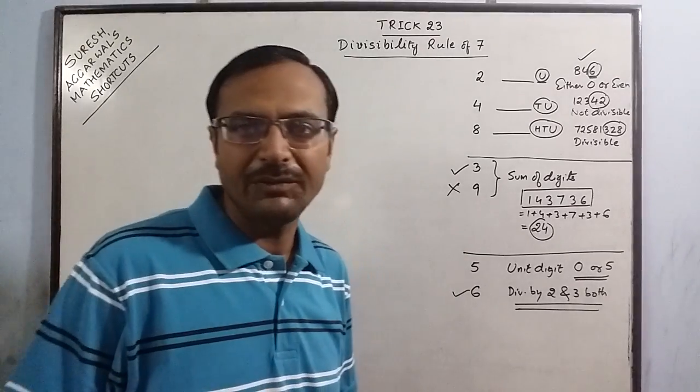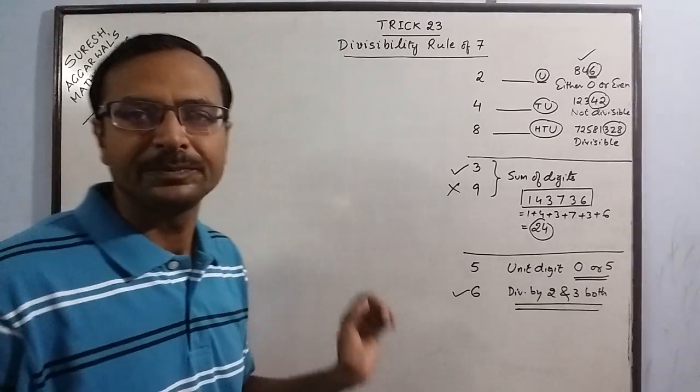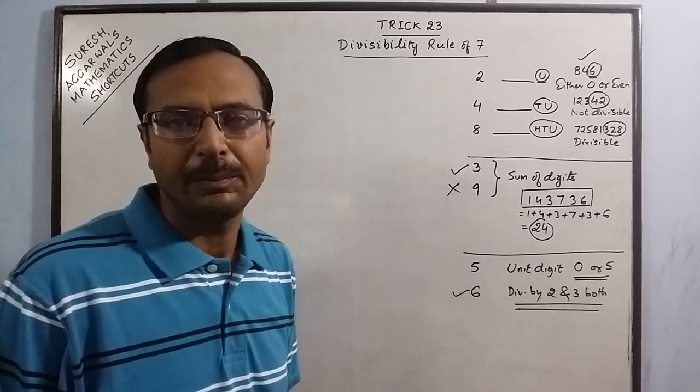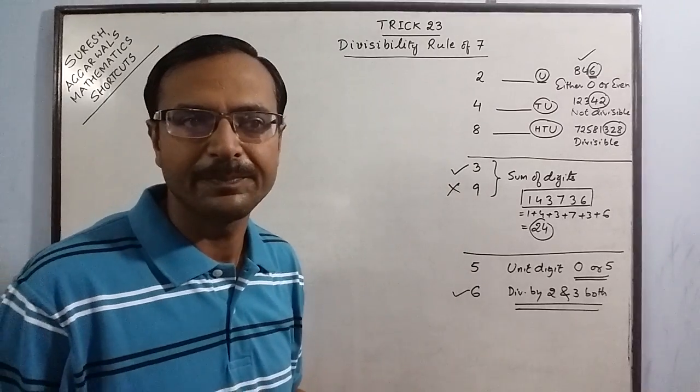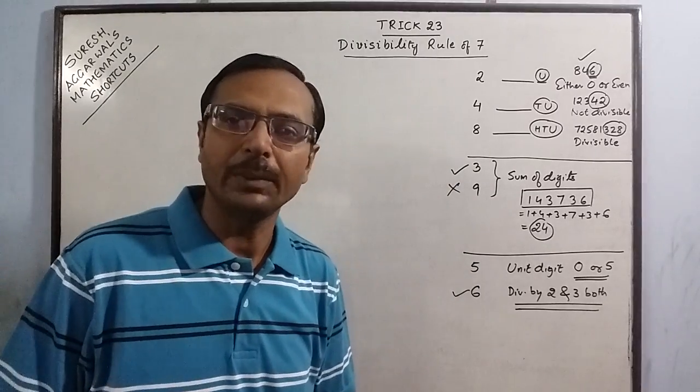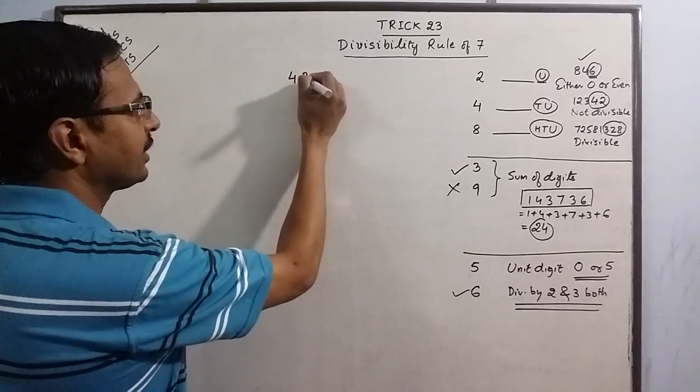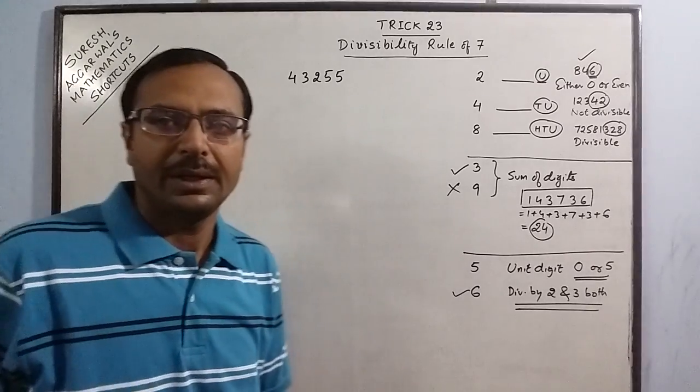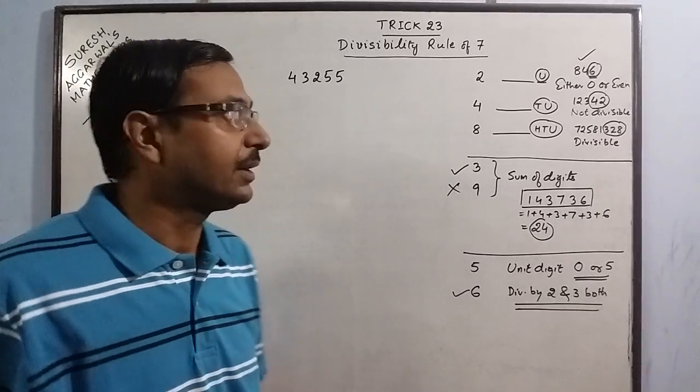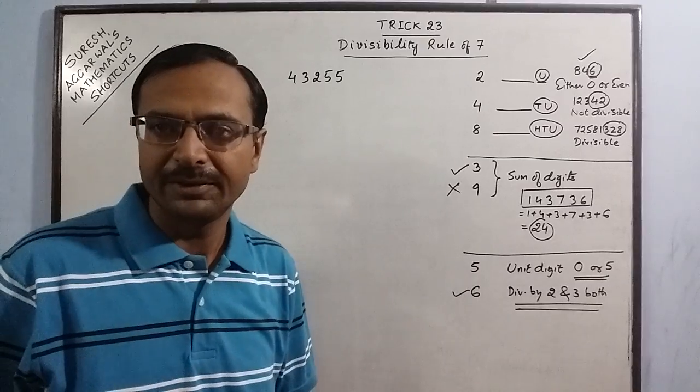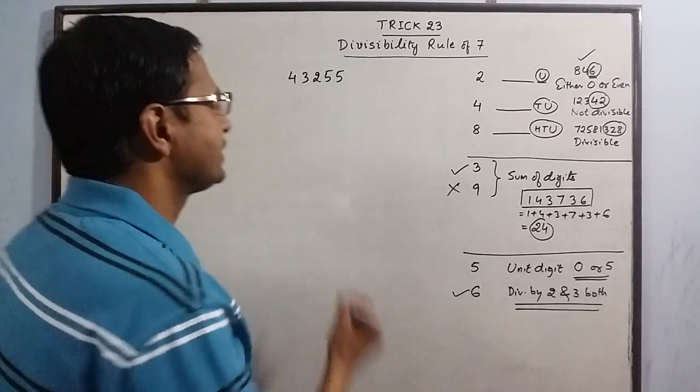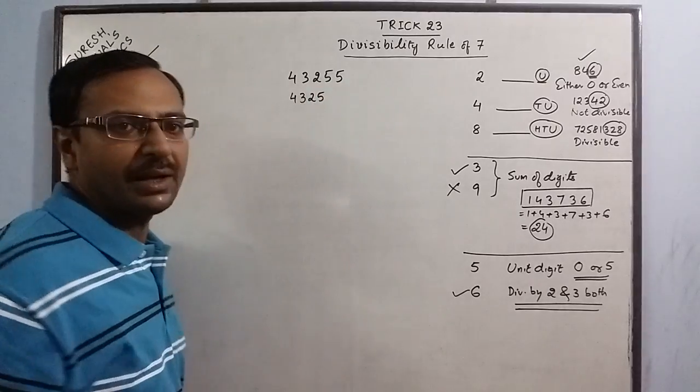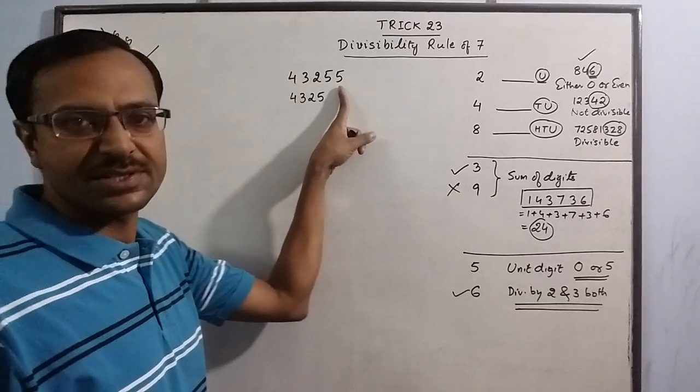So now we are going to deal with the divisibility rule of 7, which is one rule which we have to remember because it is different from other single digit numbers. Now let us take one more example for this. Say we have the number 43255. Now for illustrating the rule for divisibility by 7, what we do is we write the entire number as it is leaving behind the last digit.